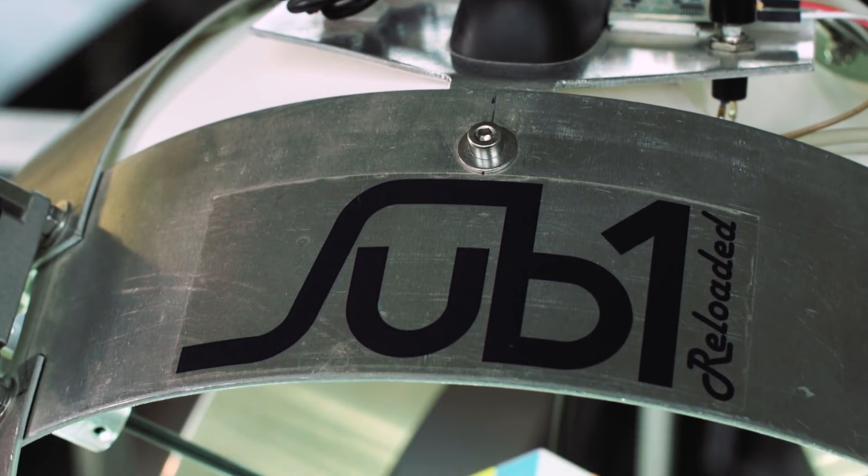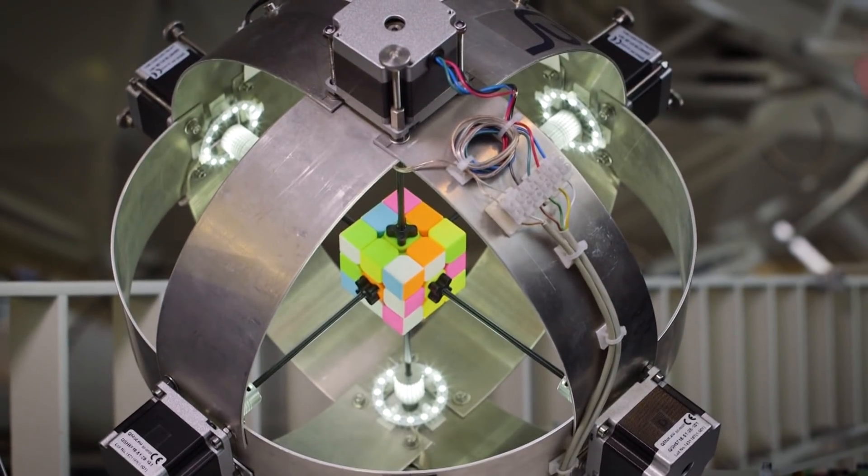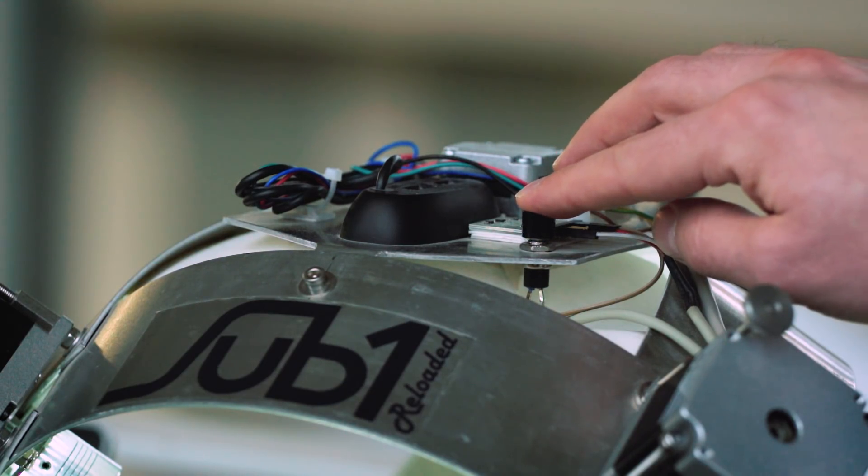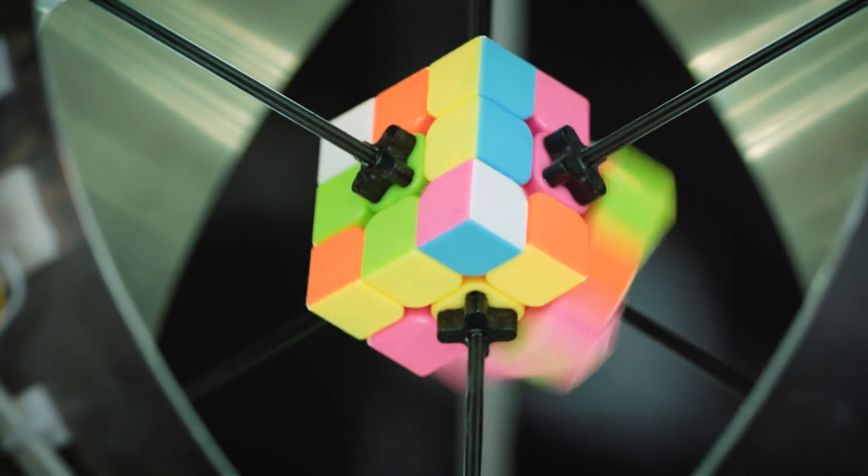It has two cameras. They're here and here. In the moment you press the button, the cameras start to work, so the robot can't have a look at the Rubik's Cube before to analyze it.